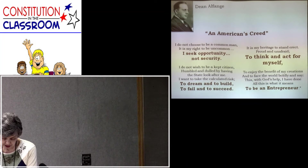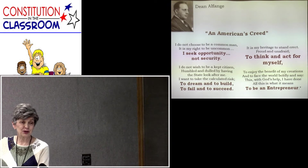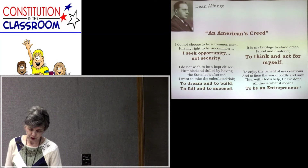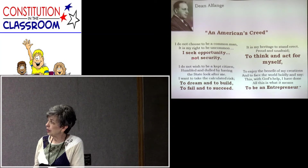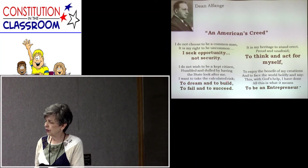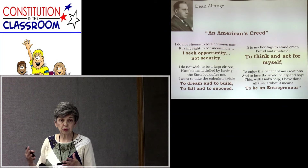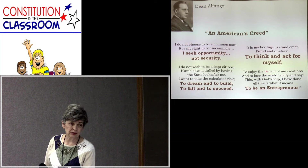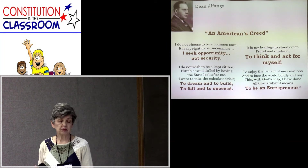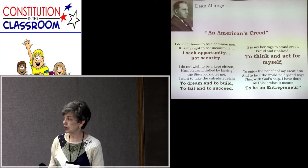On page 22 there's an 'American Creed' by Dean Alphonse: 'I seek opportunity, not security. I want to dream and to build and to fail and to succeed.' We have to help students understand that fail and succeed come together. 'I want it to be my heritage to stand erect, to think, and to act for myself, not be controlled.' People don't understand that under socialism and communism, you're going to be controlled. Ben Franklin said: 'Any society that will give up a little liberty to gain a little security deserves neither and loses both.'